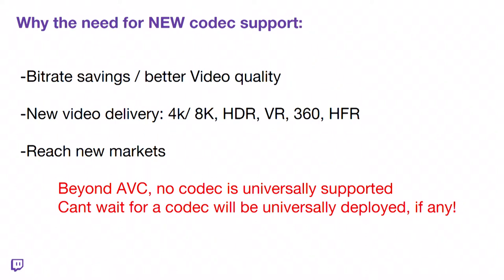You also want to deliver new technologies like 4K, 8K, HDR, and high frame rate — very fancy technologies. VR and high frame rate are very important for Twitch or gamers in general, where 60fps or even 120fps matters; the bigger the screen, the higher the frame rate effect. 10-bit is also relevant. And you want to reach new markets — areas of the world that can't watch 1080p at 6 megabits or more — so delivering best quality at a lower bitrate means more customers.